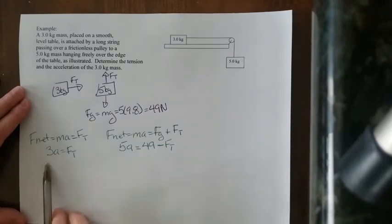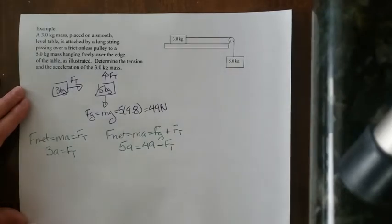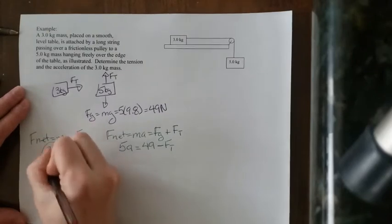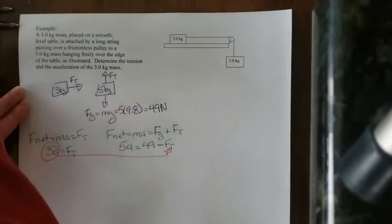Now it's a simple math problem. I have two equations and two unknowns. You learned lots of ways to solve this in math class. You can use any way you like. I like substitution because I have Ft is equal to 3A. So wherever I see an Ft on this side, I'm going to put in the 3A. So this 3A is going to go anywhere I see the Ft because they mean the same thing.